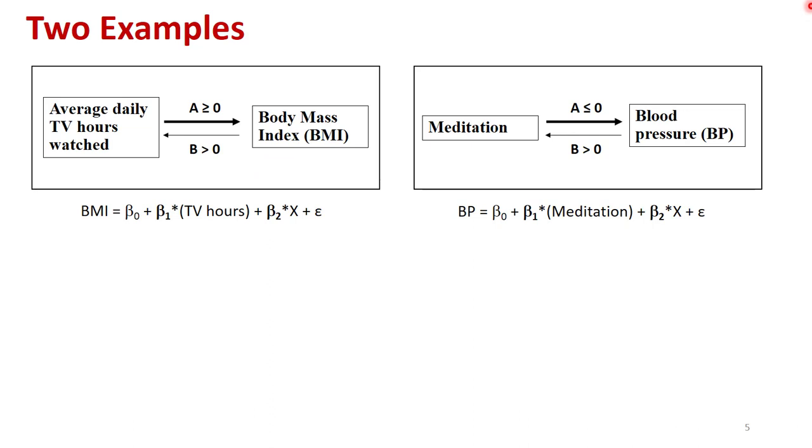Now let's compare two examples and see what can we learn from different estimates. In the first case, we're just bringing over the TV and BMI example. In the second case, we're looking at how does meditation affect blood pressure. In this case, I'm going to suppose that the true effect of TV on body mass index is zero, or possibly positive. And I'm going to suppose that there's a positive reverse causality. This is the lethargy argument.